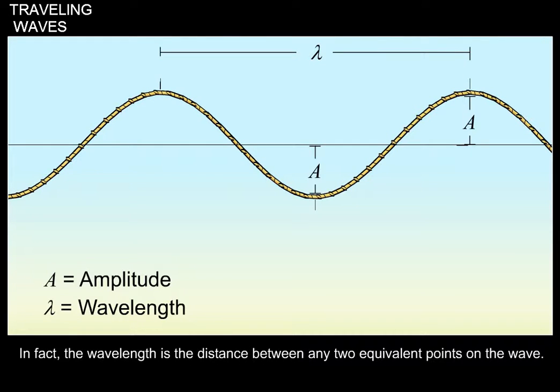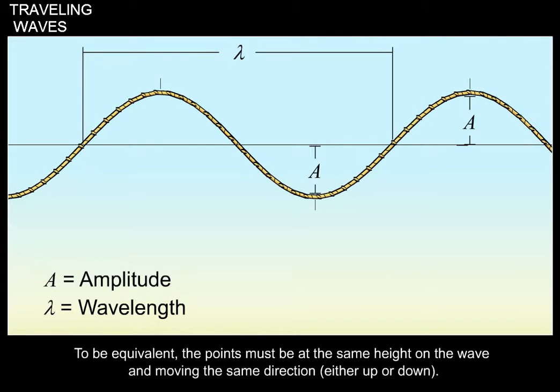In fact, the wavelength is the distance between any two equivalent points on the wave. To be equivalent, the points must be at the same height on the wave and moving the same direction, either up or down.